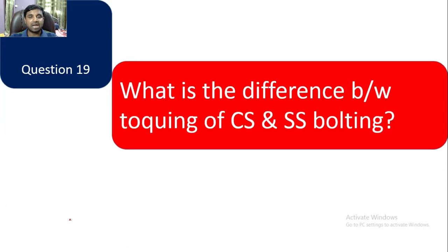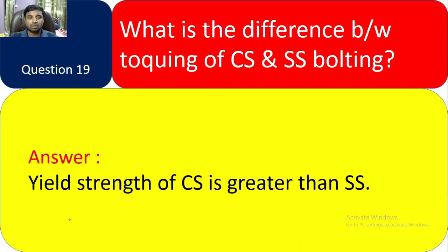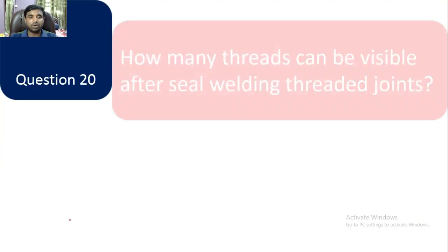Question 19: What is the difference between torquing of CS and SS bolting? Answer: The yield strength of CS is greater than SS. This is the simple reply. Question 20: How many threads can be visible after seal welding threaded joints? Answer: Zero — you cannot see any threads after seal welding threaded joints.